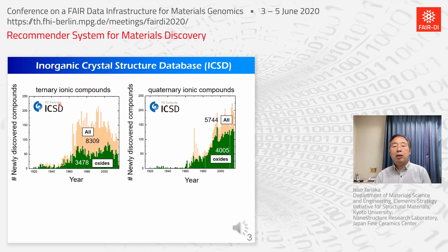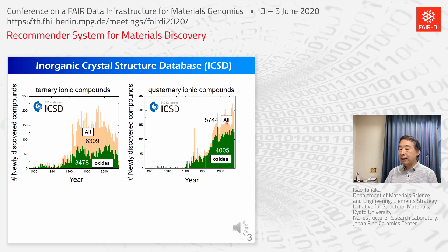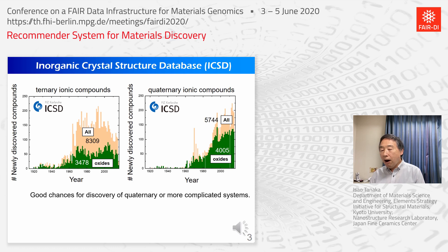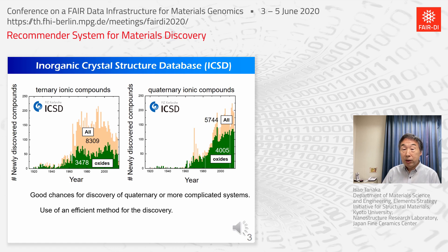This is a comparison of ternary and quaternary ionic compounds. As compared to ternary, the discovery rate of the quaternary compound is still increasing, and most of them are oxide. This suggests that there are good chances for the discovery of quaternary or more complicated systems. In order to explore the huge chemistry space, however, we need to have an efficient method for discovery.